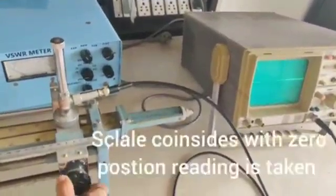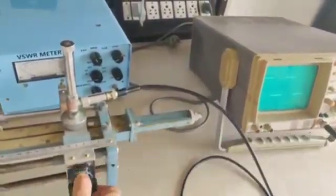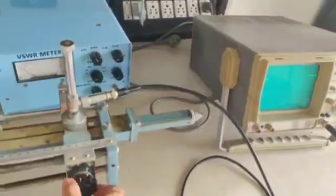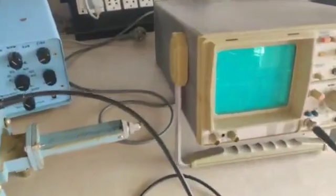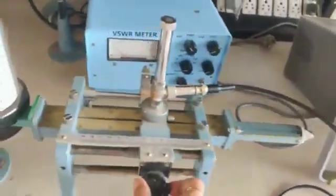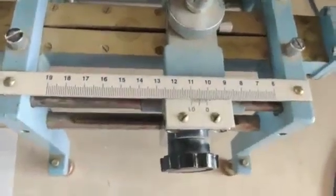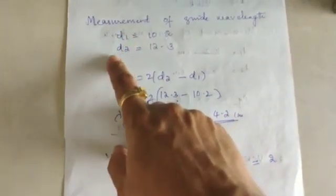Looking to the CRO screen, this is the first maximum. We have to find out the first minimum reading. Now this is the first minimum. Just we have to note down this scale reading, that is 10.2, that is distance d1.